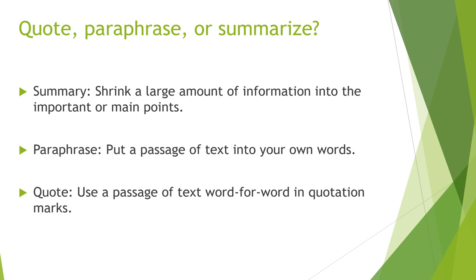Throughout this workshop I've mentioned quotations, paraphrase, and summary. Differentiating between these will really help you avoid plagiarism. When you use information from outside sources to support your own arguments, you need to decide how you will present that information in your paper. Will you use the author's exact language word for word? Will you summarize a long passage into a brief synopsis? Summary is when you shrink a large amount of information into your own main points. Paraphrase is putting a passage of text into your own words. Quoting is when you use a passage of text word for word in quotation marks.